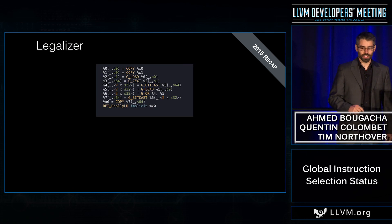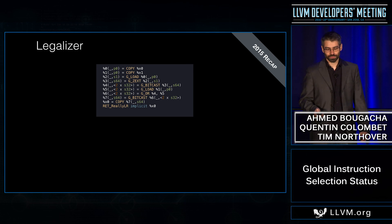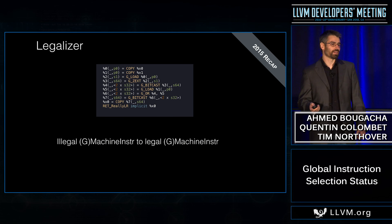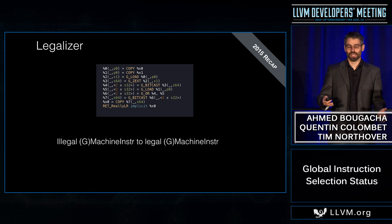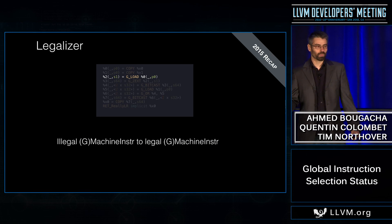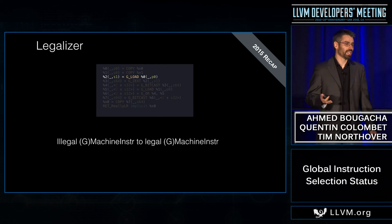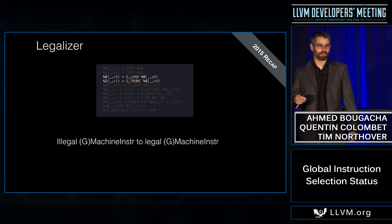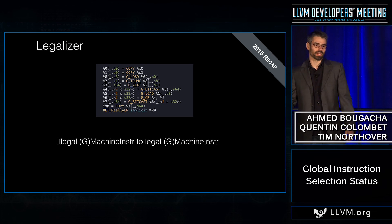Let's see how the legalizer works. The goal of the legalizer is to replace illegal machine instructions with legal ones. In this example, we have a load of one bit that is illegal. For AArch64, that's going to be legalized to a load of a byte, and then we truncate back that value to one bit. At this point everything else is legal and we are done with legalization.